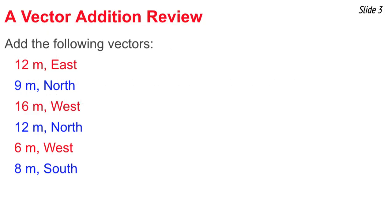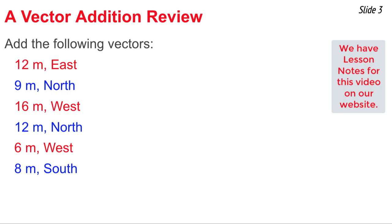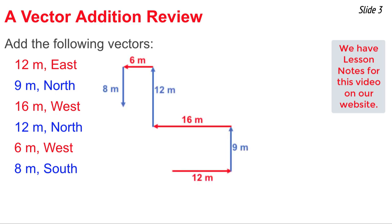Before we discuss the use of the analytical method to add non-perpendicular vectors, let's discuss how to add right-angle vectors, like these six north-south east-west vectors. If I were to add these six, I would lay them out in a head-to-tail fashion, beginning the tail of the second vector at the arrowhead of the first, and so forth, until all vectors have been added. Then I'd draw my resultant from the tail of the first vector to the arrowhead of the last vector.